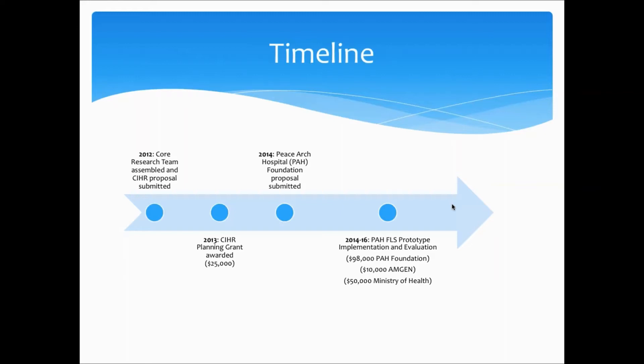This is a timeline showing how we progressed through the various stages to get to a fully implemented FLS program. As you can see, it was a long journey. We started back in 2012 by bringing together a research team, and managed to get some research planning grant funding to start moving forward and figuring out what was going to work in our health authority.